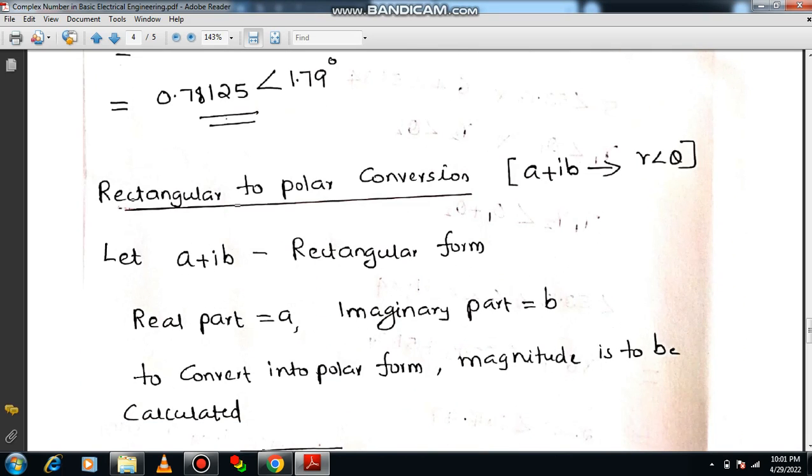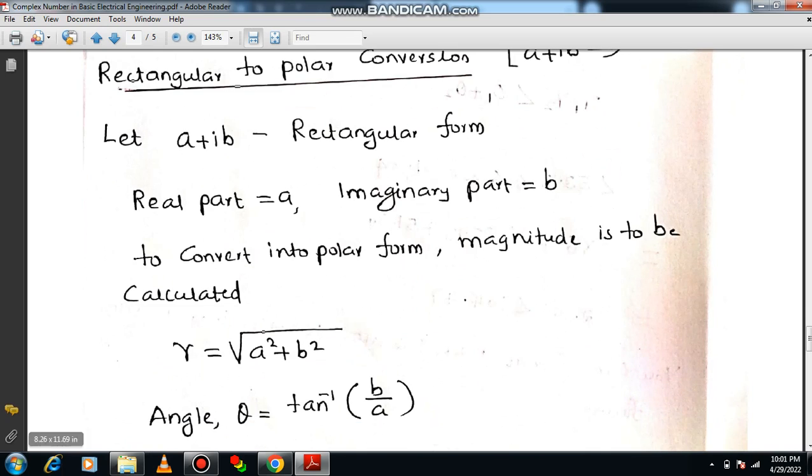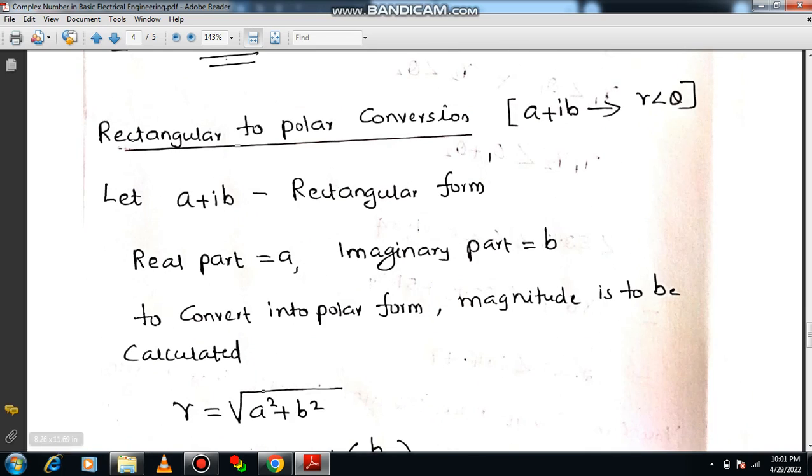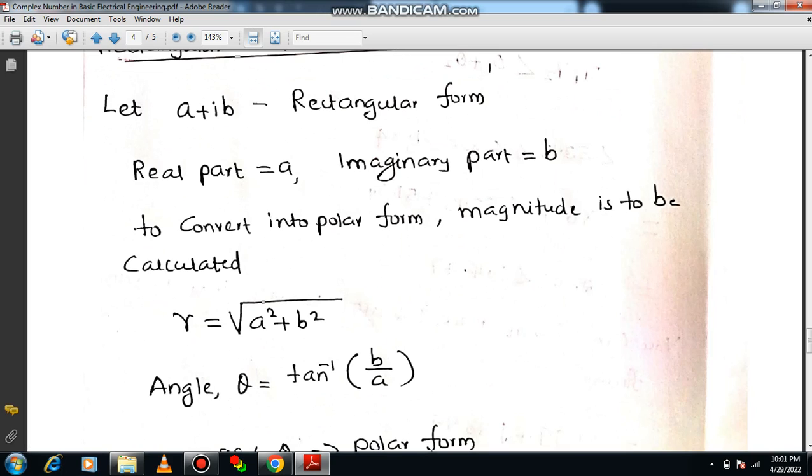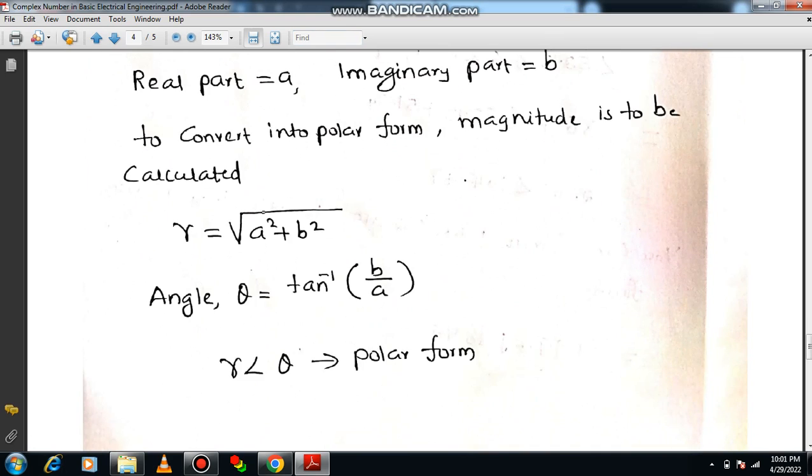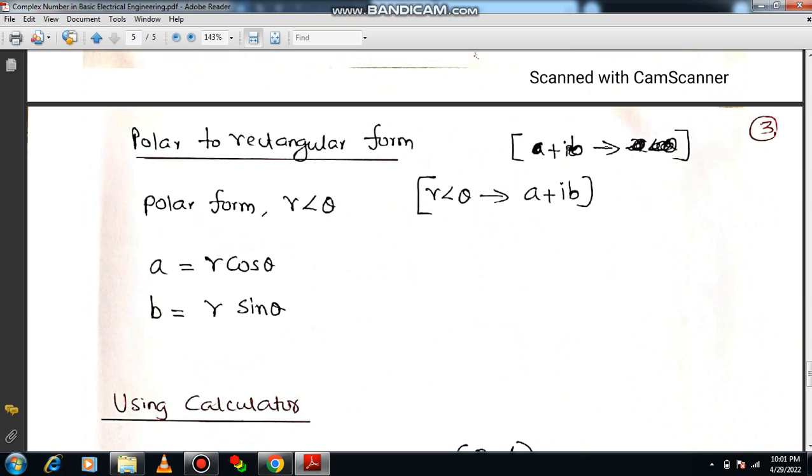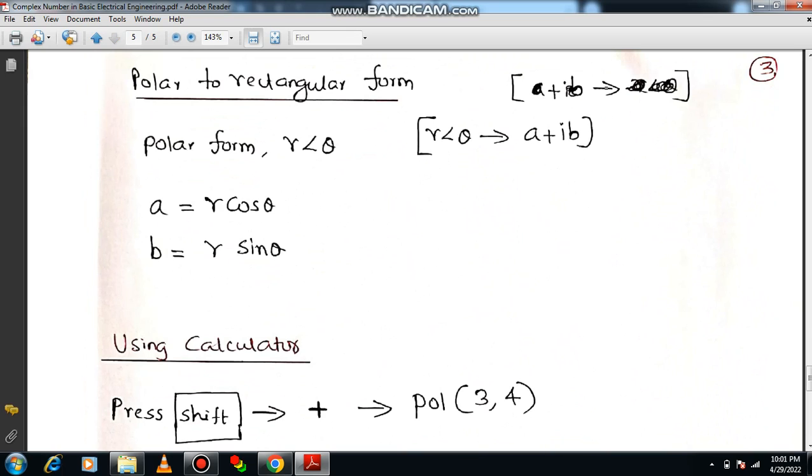Now how do you convert rectangular into polar conversion? A plus IB is rectangular form. Real part is A, imaginary part is B. So A plus IB should be converted into R angle theta. Here R is square root of A square plus B square, and theta will be tan inverse of B by A. This is the way how to convert rectangular to polar form. And also polar to rectangular: R angle theta should be converted into A plus IB. A you can write in terms of R. That means A equals R cos theta, B equals R sine theta.